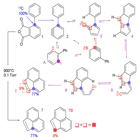Radioisotopic labeling is a technique for tracking the passage of a sample of substance through a system. The substance is labeled by including radionuclides in its chemical composition. When these decay, their presence can be determined by detecting the radiation emitted by them. Radioisotopic labeling is a special case of isotopic labeling.